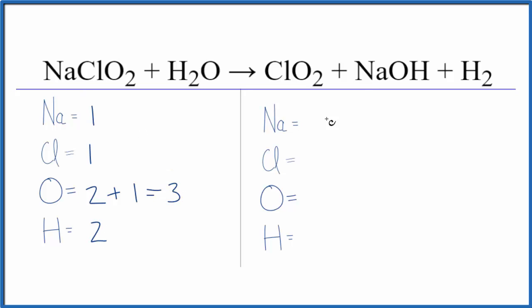Product side we have one sodium, one chlorine, two oxygens plus we have an oxygen here in the sodium hydroxide that gives us three and so far everything's the same but for the hydrogen we have one hydrogen here plus we have two hydrogens here so three hydrogens. This equation is not balanced even though it's close.